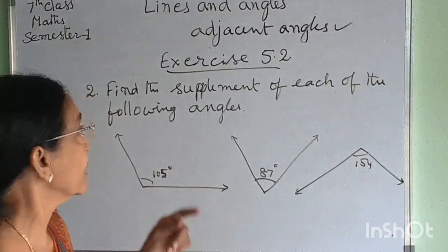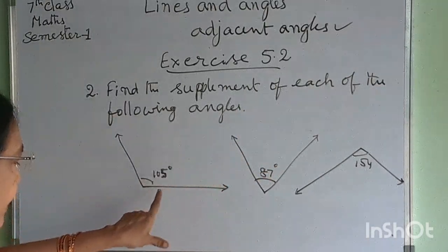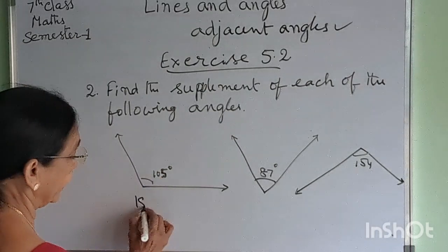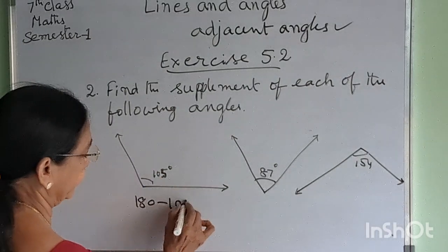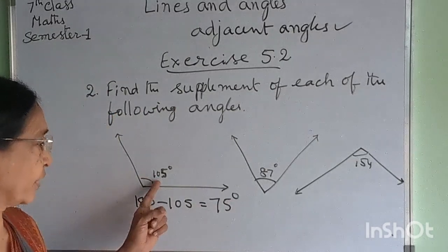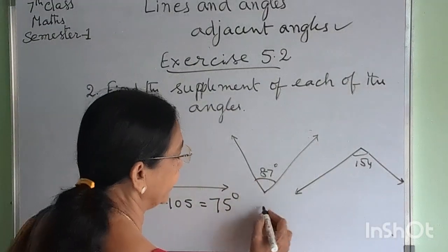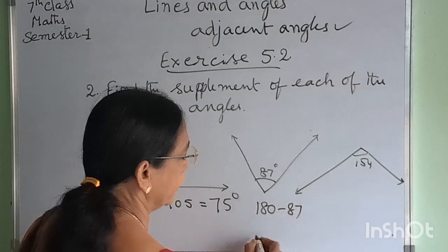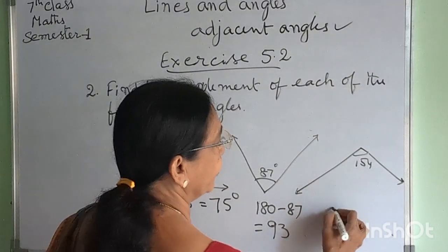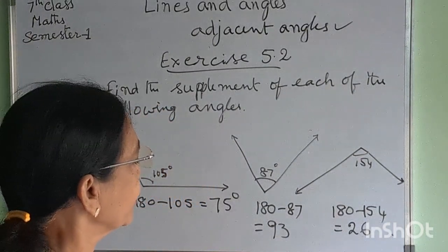Next, coming to the exercise. The second problem: find the supplement of each of the following angles. The supplement of 105 degrees is 180 minus 105 equals 75 degrees. The supplement of 87 degrees is 180 minus 87 equals 93 degrees. The supplement of 154 degrees is 180 minus 154 equals 26 degrees.